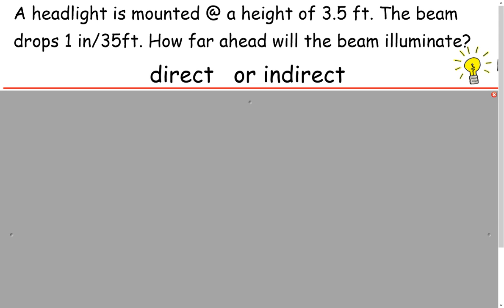Here's another example. A headlight is mounted at a height of 3.5 feet and the beam drops one inch per 35 feet. How far ahead will the beam illuminate? Let's remember our helpful hint that we have to try to set it up, but first we have to decide if it's going to be direct or indirect. For this one, it's going to be direct. So when we go ahead and set this up, the proportion in words, we're going to set it up as a direct proportion.